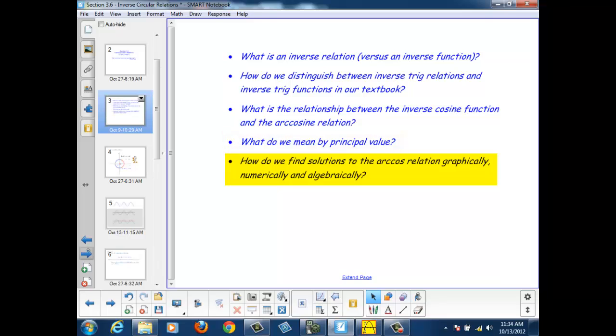What do we mean by principal value? How do we find solutions to the arc cosine relation graphically, numerically, and algebraically?